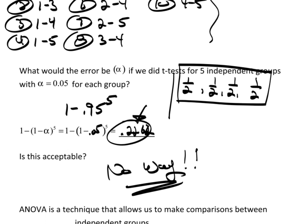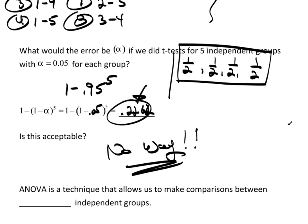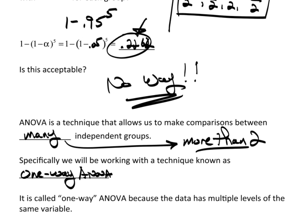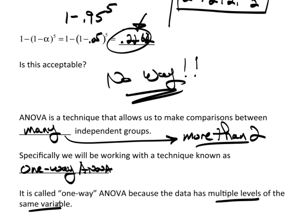One way that we deal with this is to use an ANOVA. ANOVA technique allows us to make comparisons between many independent groups. Where many here, we would use ANOVA for really more than two groups. Specifically, we're going to be working with a technique called one-way ANOVA. The reason we call it one-way ANOVA is because the data has multiple levels of the same variable. We're only dealing with one variable, but that variable has different levels within it. That may make more sense when we actually jump into an example.